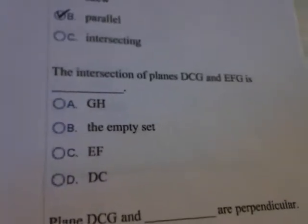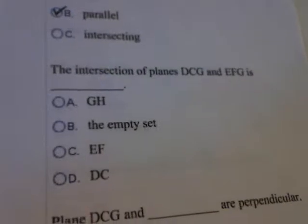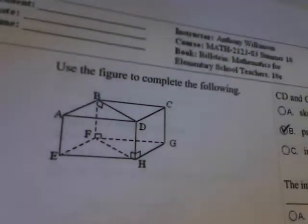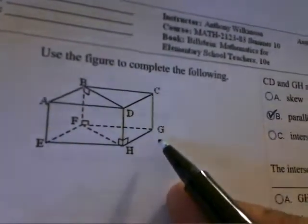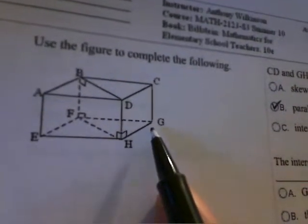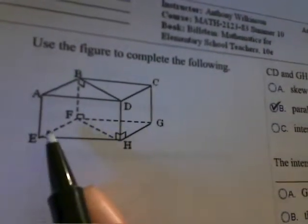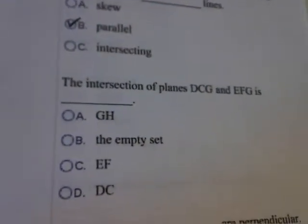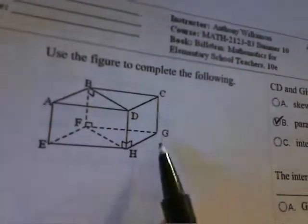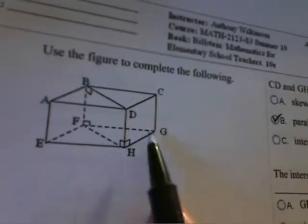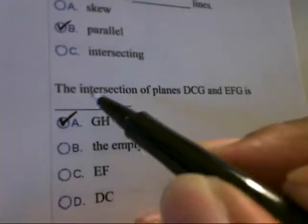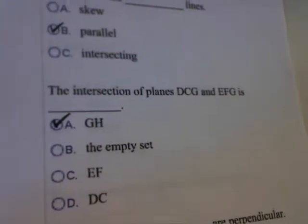The next question in problem one is: the intersection of planes DCG and EFG is what? Let's look at DCG — here's D, here's C, that's G — that's the plane on the right-hand side. And then EFG: here's E, here's F, and here's G — that's the plane at the very bottom. You're given choices of GH, the empty set, EF, or DC. The intersection of plane DCG and plane EFG is simply GH.